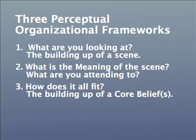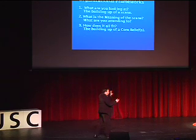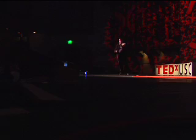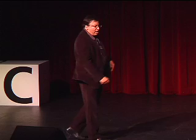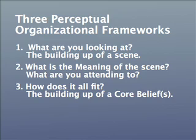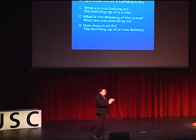And there are three perceptual frameworks. One: what are you looking at? The building up of a scene — what's close, what's far, red, motion, color, etc. The second framework is what is the meaning of the scene? What are you attending to? Are you in a hostile or friendly environment? And the third is how does it all fit in the building up of a core belief system or core beliefs? You can have more than one.